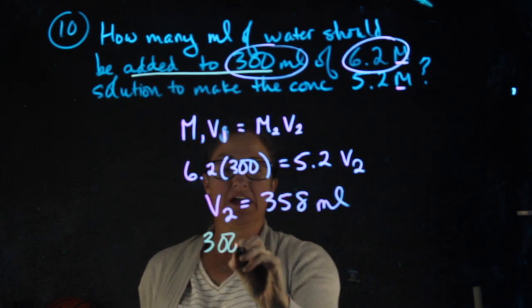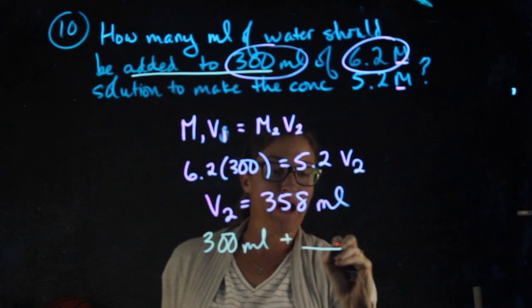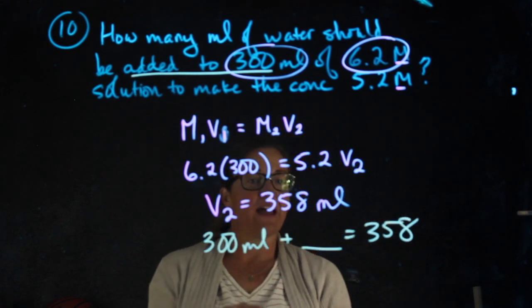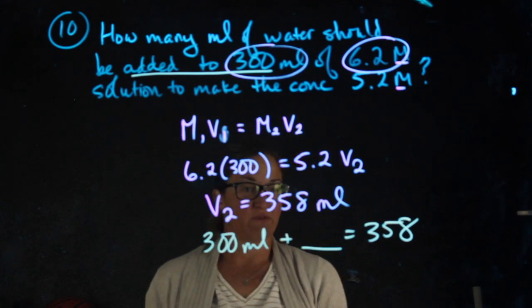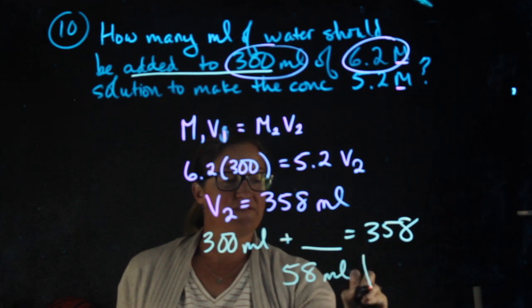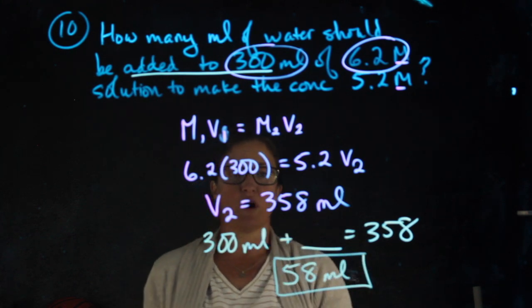So in other words, 300 milliliters plus what equals 358? To answer that, I'm going to subtract 300 from 358 and find that I need to add 58 milliliters of water.